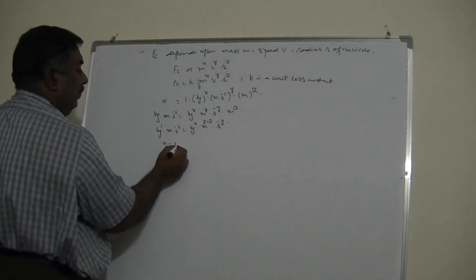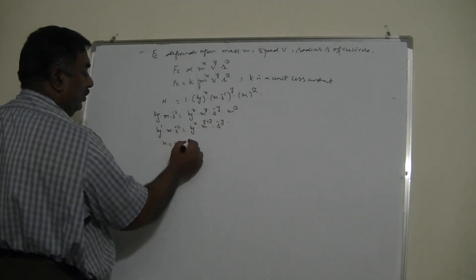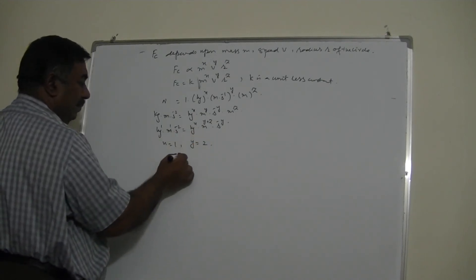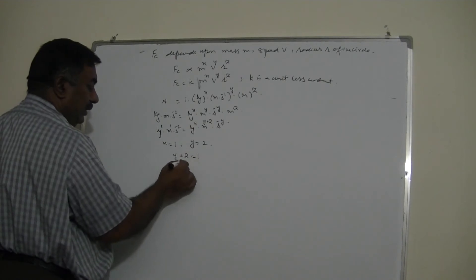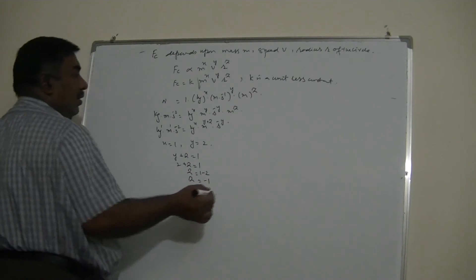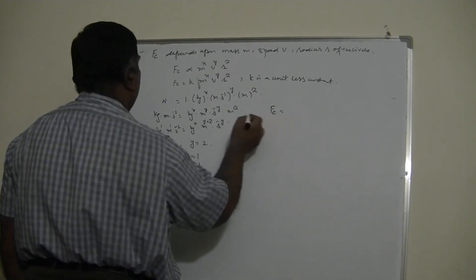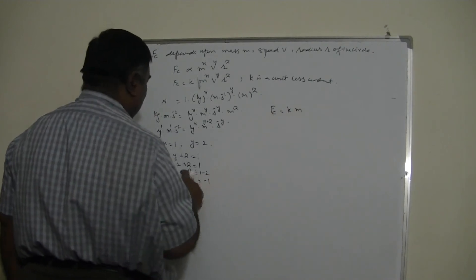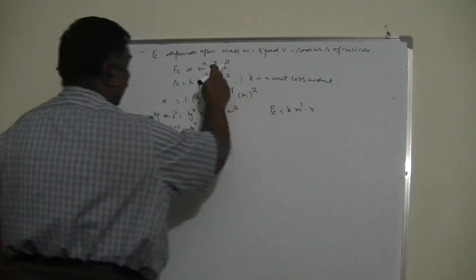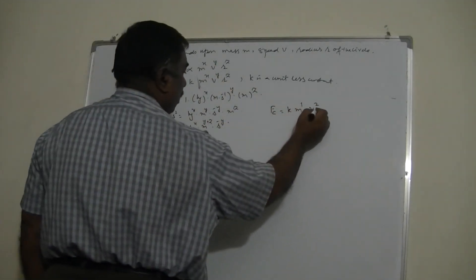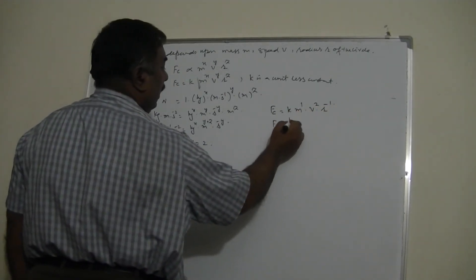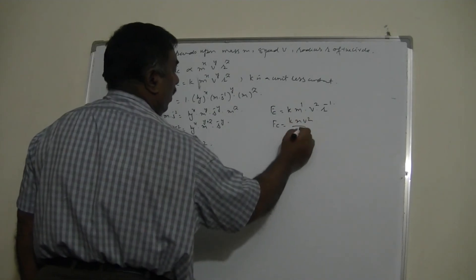Comparing powers: for kg, x = 1; for s, -y = -2, so y = 2; for m, y + z = 1, so 2 + z = 1, giving z = -1. I can now write the formula: Fc = k · m^1 · v^2 · r^(-1).